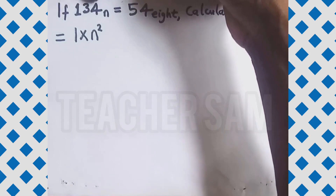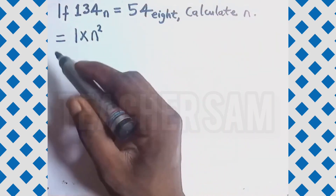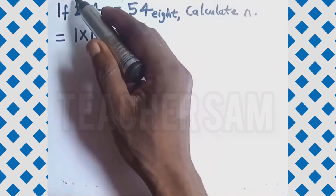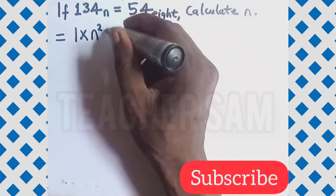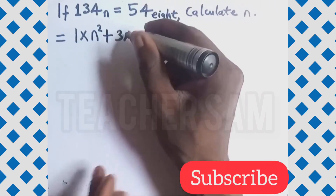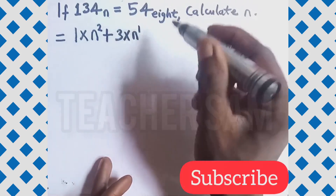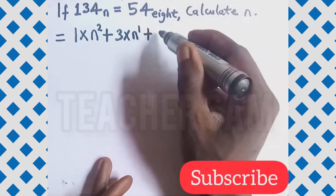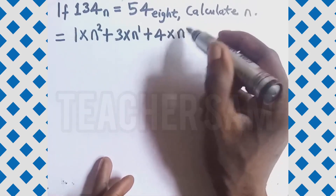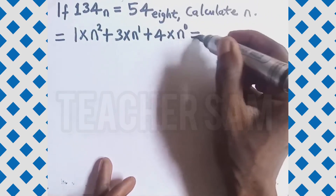So we have: 1 times n raised to power 2, plus 3 times n raised to power 1, plus 4 times n raised to power 0. We are using the powers to deal with each digit's place value.